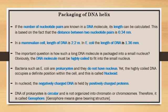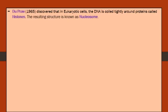The chromosome is a gene-bearing structure. In 1965, it was discovered that in eukaryotic cells, the DNA is coiled tightly around proteins called histones. The resulting structure is known as a nucleosome.